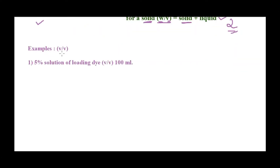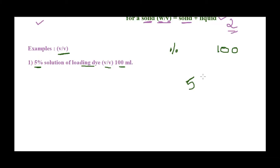Let's start with volume by volume — dealing with two liquids. The first problem: prepare a 5% solution of loading dye, volume by volume, 100 ml. One important concept: percentage simply means that particular amount in 100. So 5% means 5 ml or 5 grams in 100 ml. It is always expressed per 100 ml.